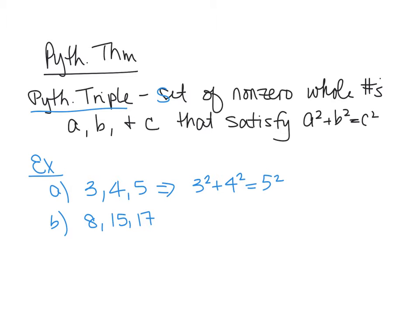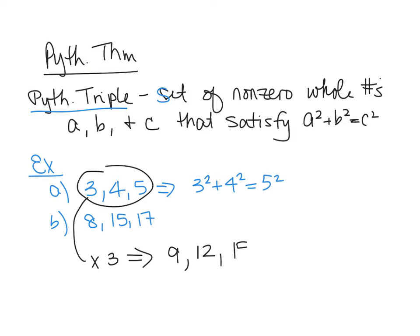These are just two examples, but if you take any of these number sets — let's take 3, 4, 5 — and multiply them all by the same thing, say multiply everything by 3, you get 9, 12, and 15. These are also Pythagorean Triples. As long as you're multiplying all three numbers by the same constant or whole number, that new set will also be a Pythagorean Triple.